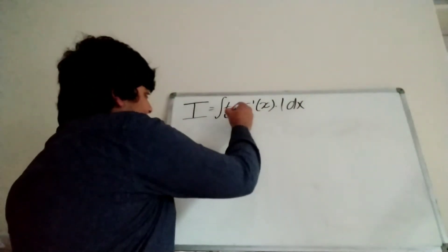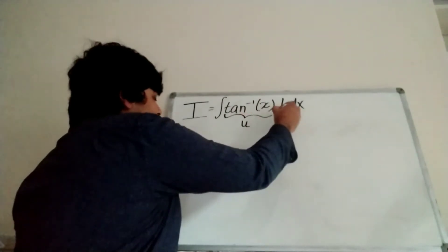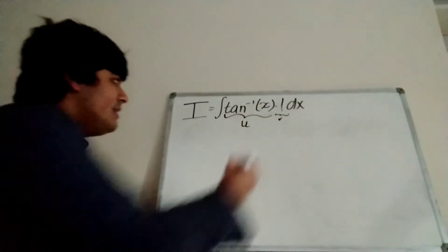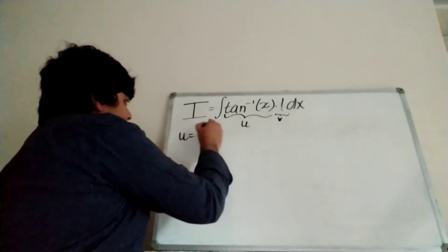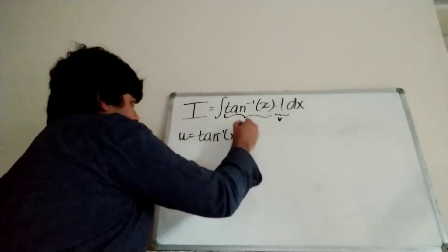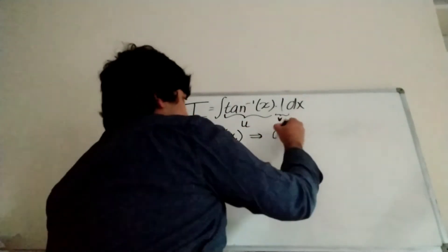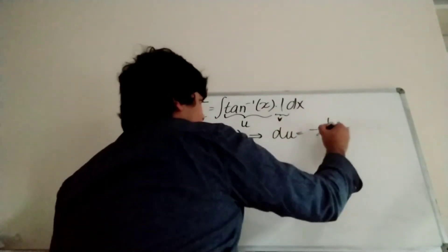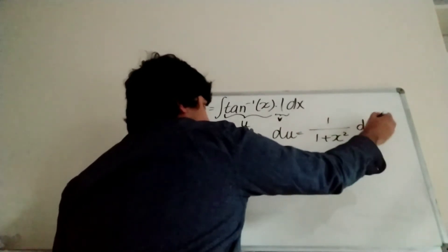Now we're going to proceed by parts by calling this thing u and this thing v. So u equals inverse tangent of x. So that means that du is just 1 over 1 plus x squared dx.